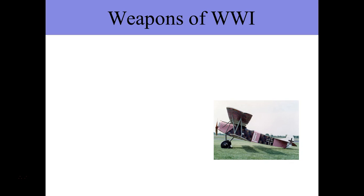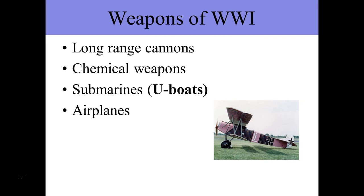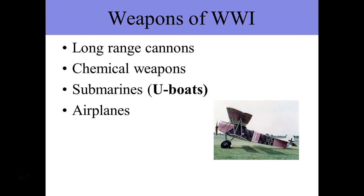Different weaponry — going fast through this. Long-range accurate cannons will be developed. We talked about the chemical weapons. U-boats will play a big part. Airplanes are something new — not just fighter planes like World War II, but you get some starting here, particularly the Red Baron, plus a lot of scouting to find enemy movements, which was really important. Machine guns are the most important weapon to understand — this is what takes the death toll so high. Tanks and flamethrowers are also introduced here — early flamethrowers, not well developed. We'll talk about those more in World War II and the Pacific Theater.